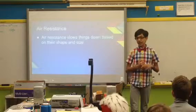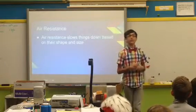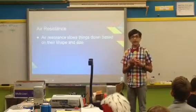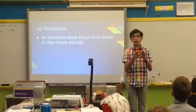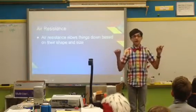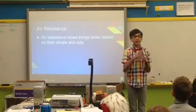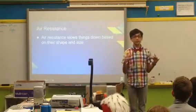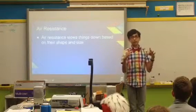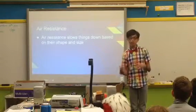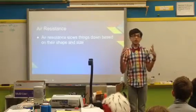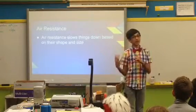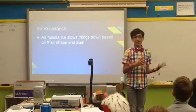Air resistance slows things down based on their size and shape. If you had a long, skinny object and a square object made of the same material with the same amount of fabric, the square object would fall slower because of its shape. A larger object will also fall slower because it traps more air, but once it gets big enough, it will actually fall faster.